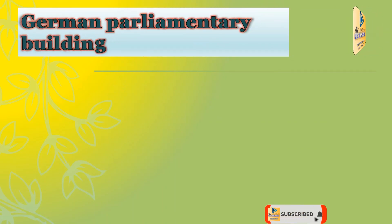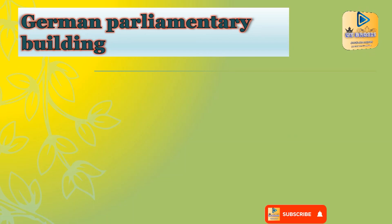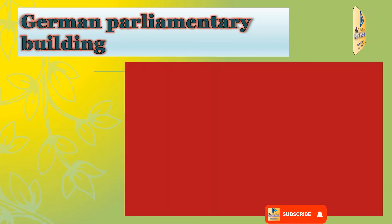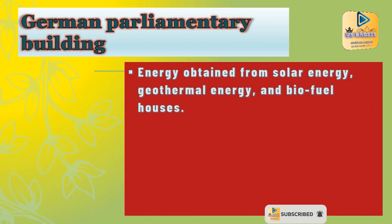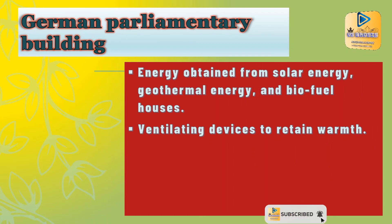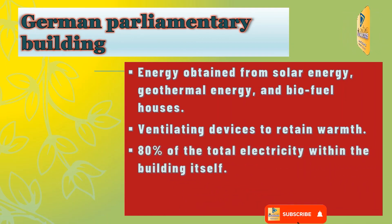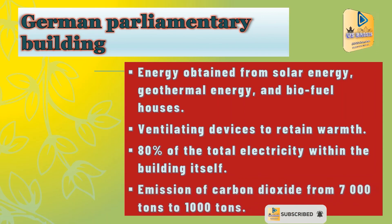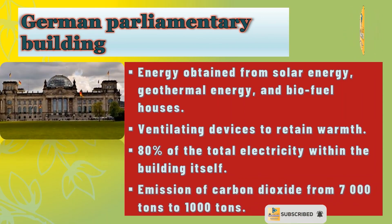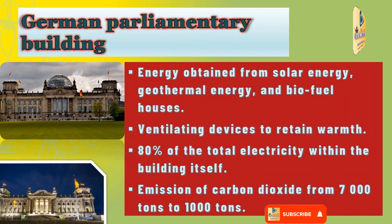First, about the German Parliamentary Building. Energy is obtained from solar energy, geothermal energy, and biofuel sources. Ventilating devices are used to retain warmth. 80% of the total electricity is generated within the building itself. Emission of carbon dioxide was reduced from 7,000 tons to 1,000 tons.